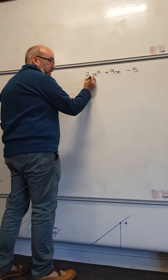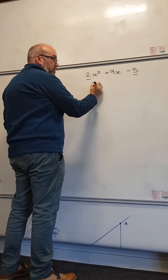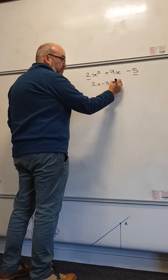What we're going to do is take this number here and this number here and multiply them together. So 2 times minus 5 gives me minus 10.